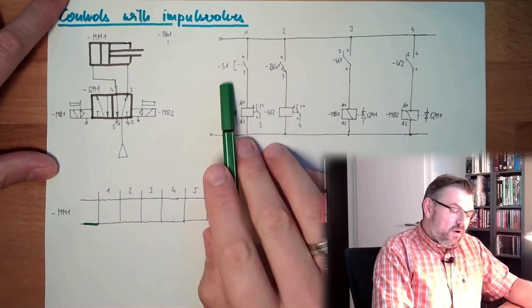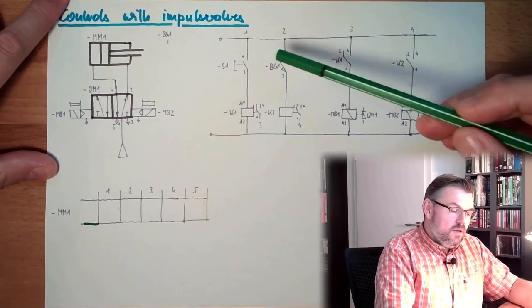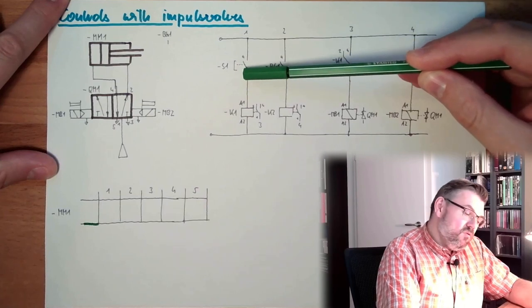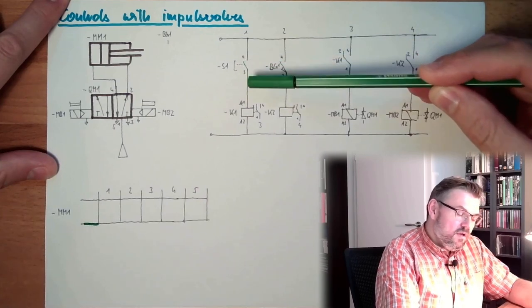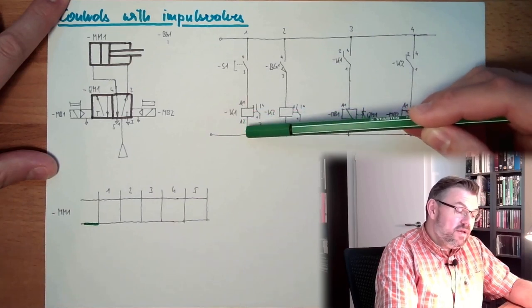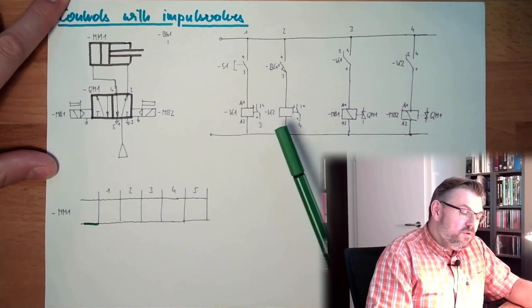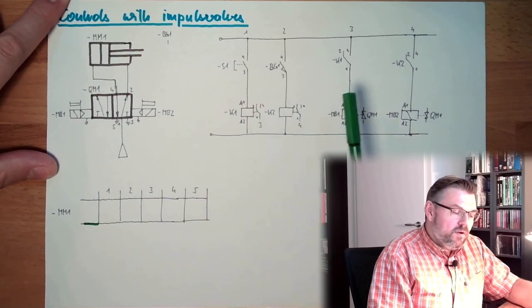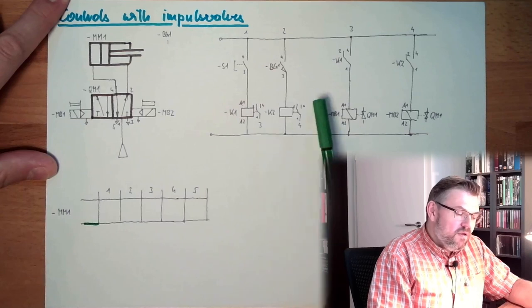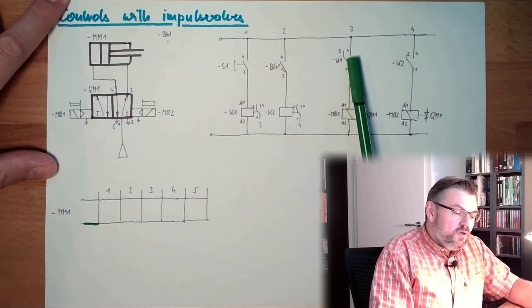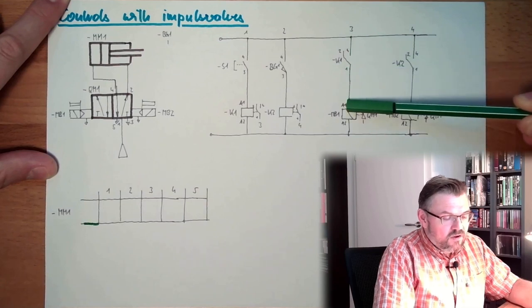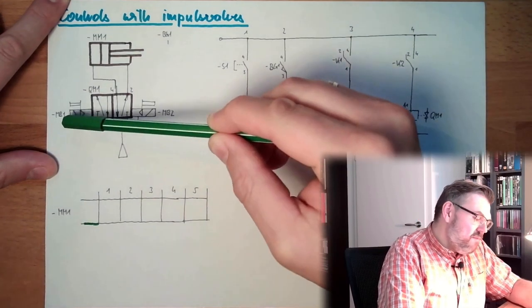Then somebody is pressing button S1, okay? Then we have here, this normally open contact is closed. K1 is energized, the coil of K1 is energized, and it will switch. It will switch from normally closed to normally open contact. If here this K1, it's in path number three. If here this K1 is now switched, we have here a connection. The connection will energize MB1.